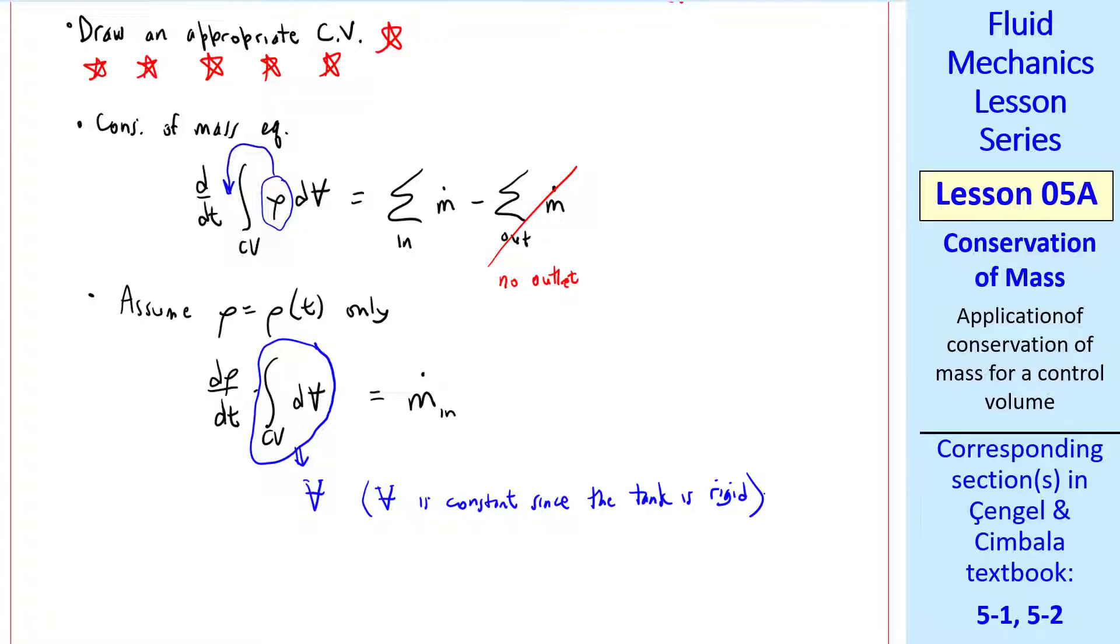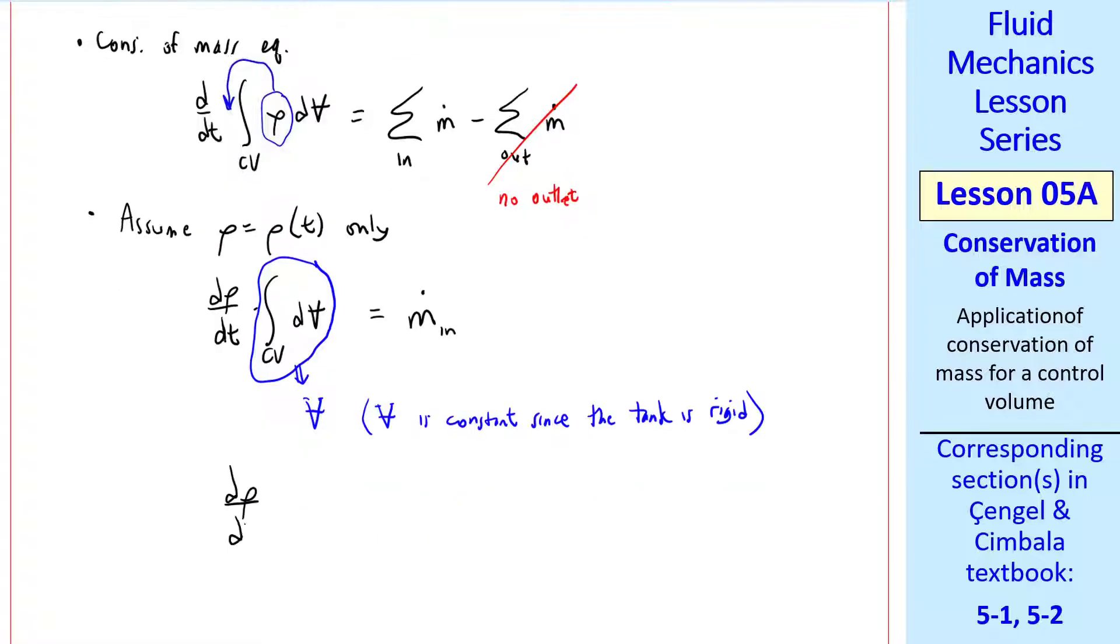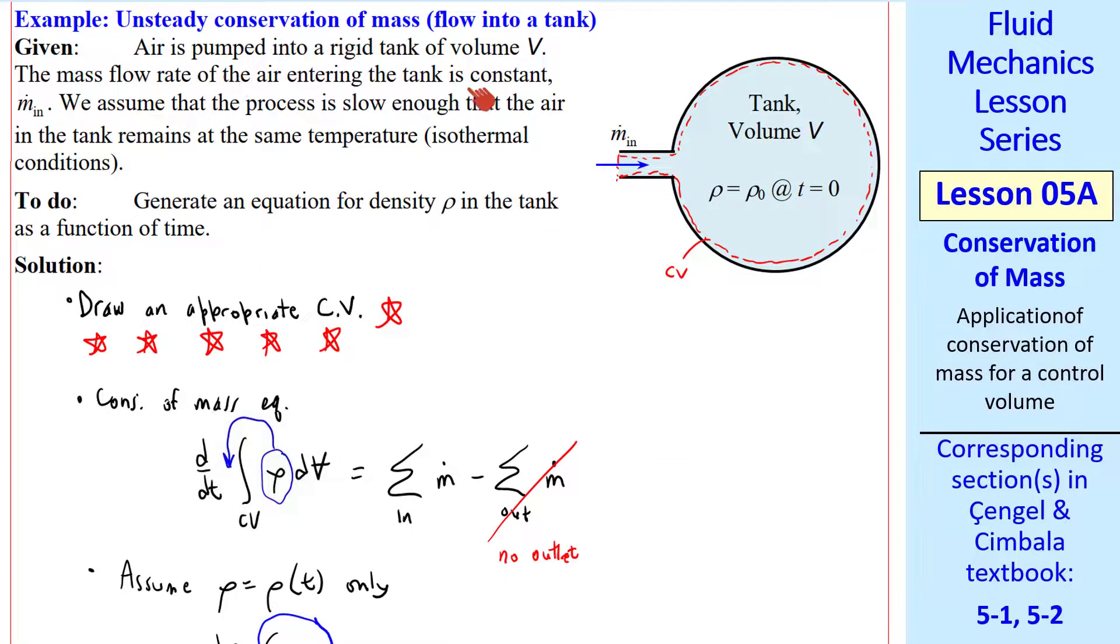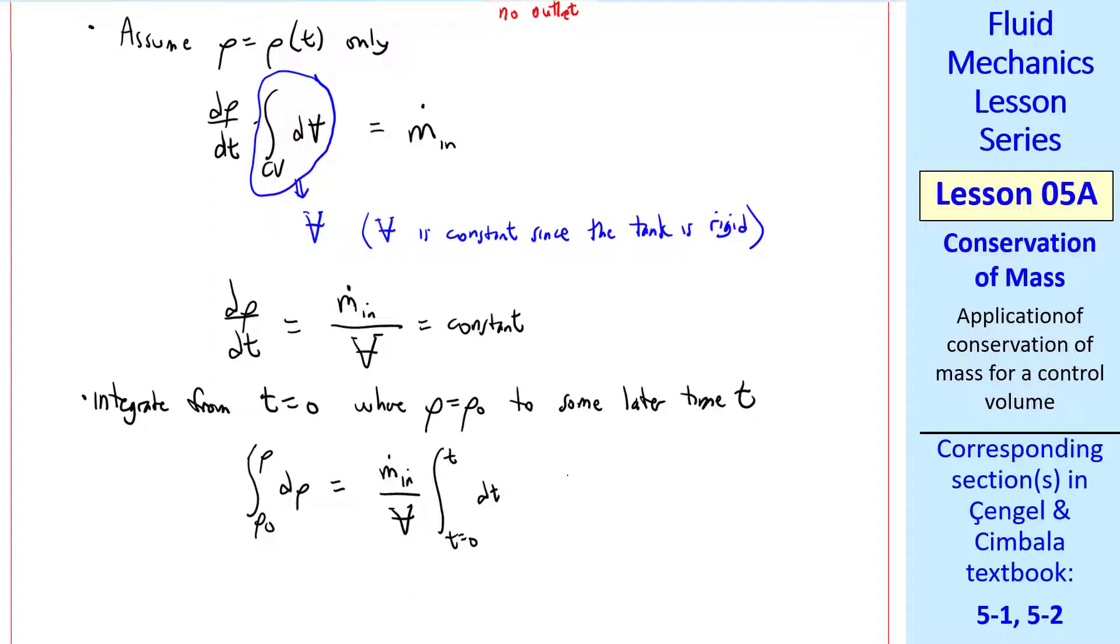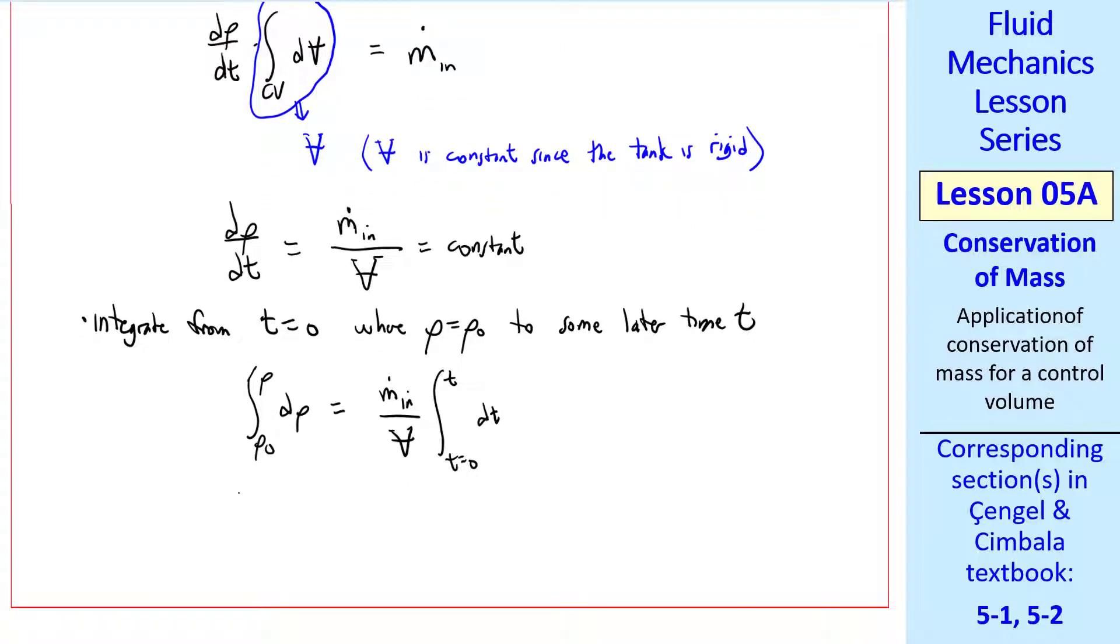Our equation reduces to d rho dt equal m dot in divided by v. In this particular problem, we also said that m dot in was a constant. So everything on the right side of this equation is constant. That allows for easy integration. We separate variables and write the integral. Both of these are trivial integrals. Rho minus rho naught equal m dot in over v times t minus 0.